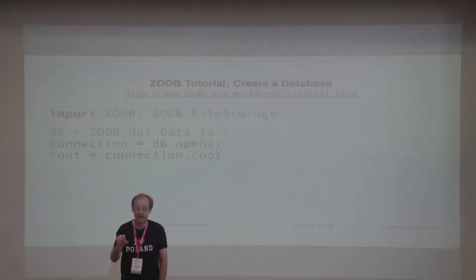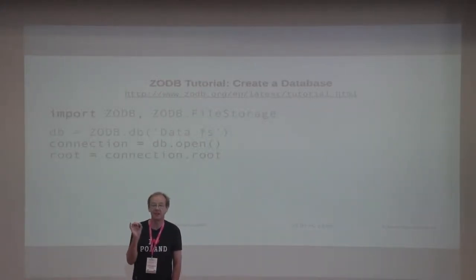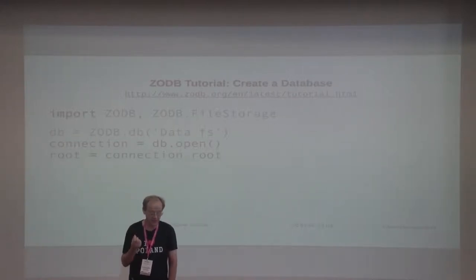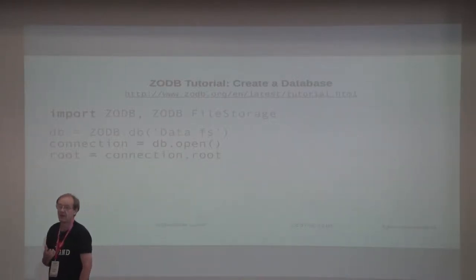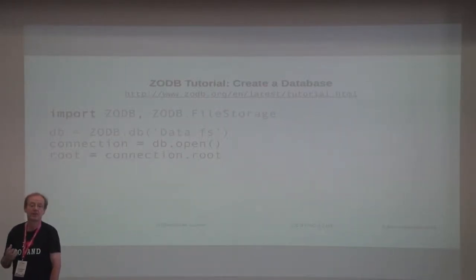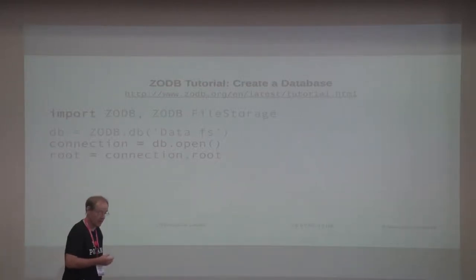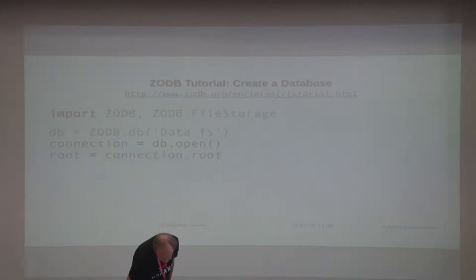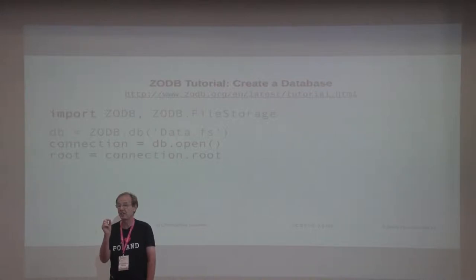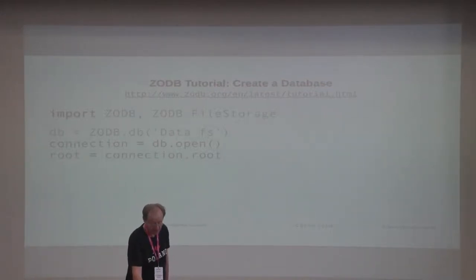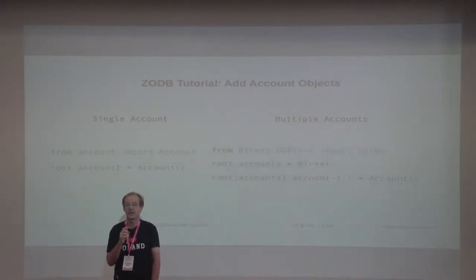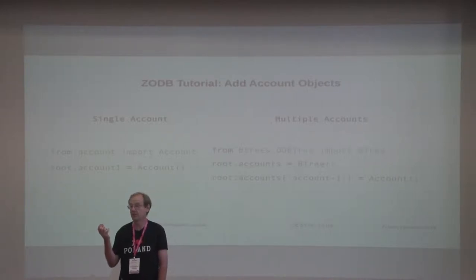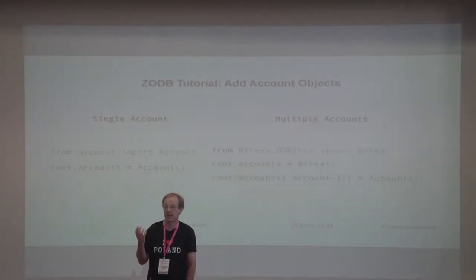To use it, you grab an object out of the database and operate on it. First you import the appropriate libraries. You can create a ZeoDB database — either on a relational database, on file storage, or in RAM. You get a connection and ask for the root object. You pull that root object, which is the persistent object, and add stuff to it. You create a new account object, set root.account1 equal to that account object, and commit the transaction. It becomes persistent.